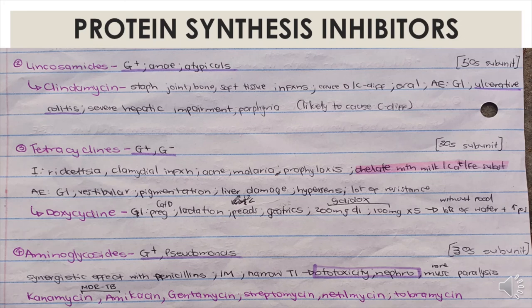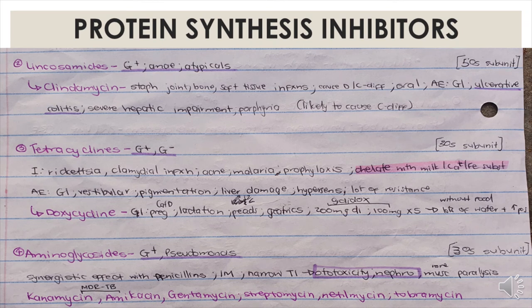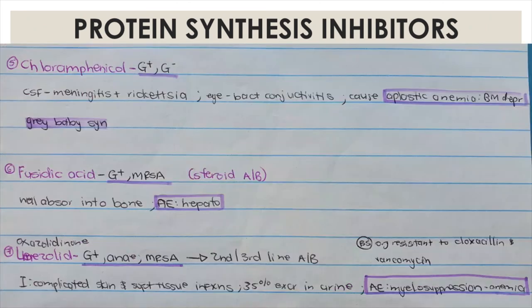Chloramphenicol covers gram positive and gram negative infections. It penetrates the cerebrospinal fluid and is therefore used in meningitis and Rickettsia. In the eyes, it is used for bacterial conjunctivitis. It causes aplastic anaemia, bone marrow depression, and Gray Baby Syndrome — because it destroys immature red blood cells in the bone marrow, the baby will appear very pale rather than pink.